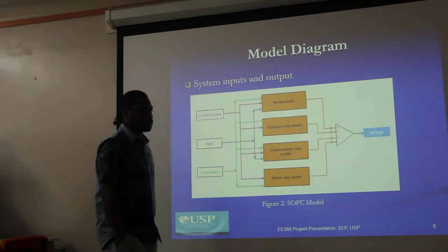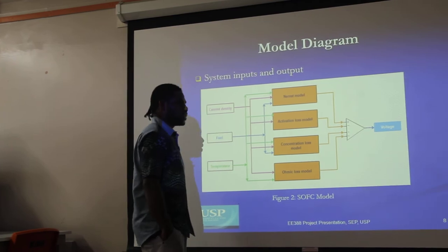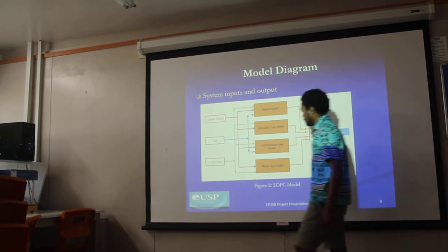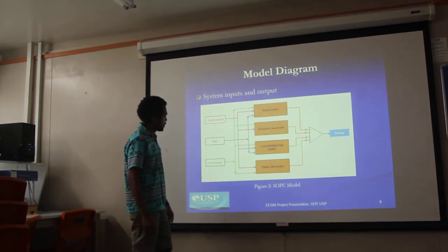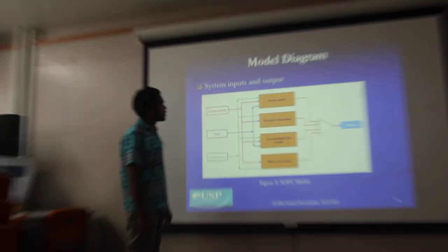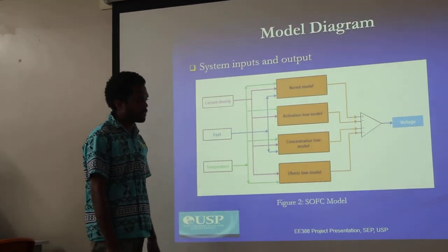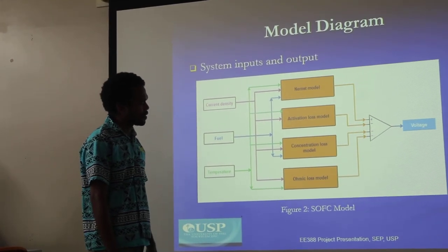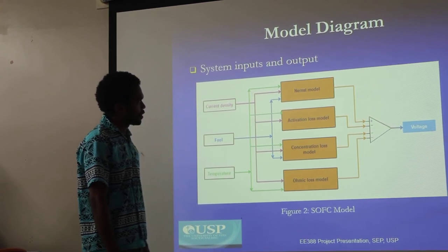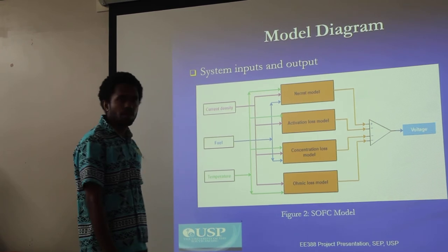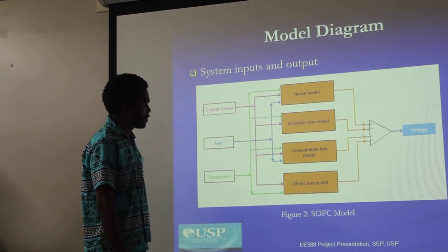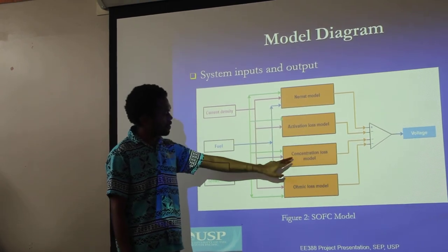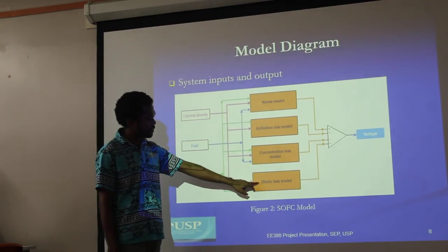We now move to the next part of our presentation, which will be presented by my colleague, Dan Silitari. Regarding the computer system simulation, this diagram shows the general model diagram. The model consists of four components: the Nernst model, activation model, concentration model, and the ohmic model.